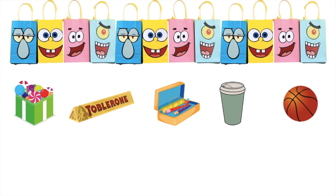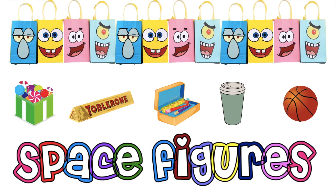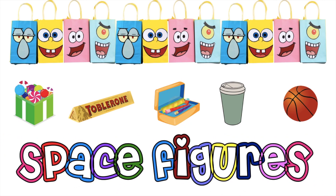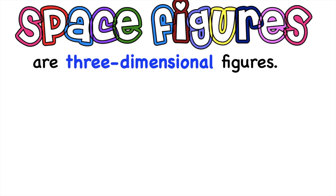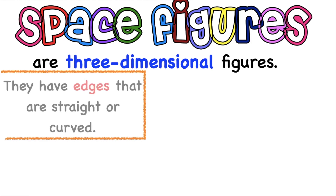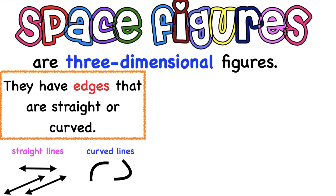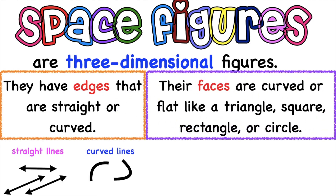These items represent our common space figures or solid figures. So when we say space figures or solid figures, those are 3-dimensional figures or 3D figures. They have edges that are straight or curved, and their faces are curved or flat like a triangle, square, rectangle, or a circle.